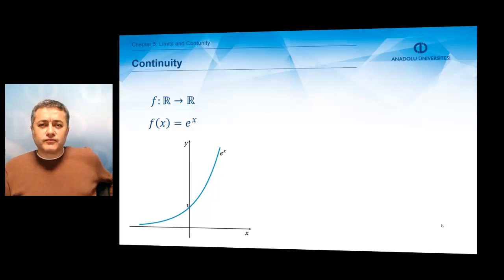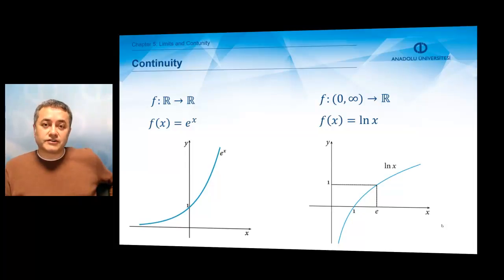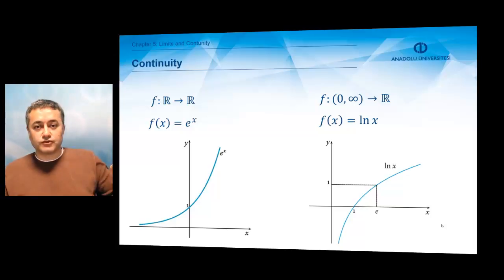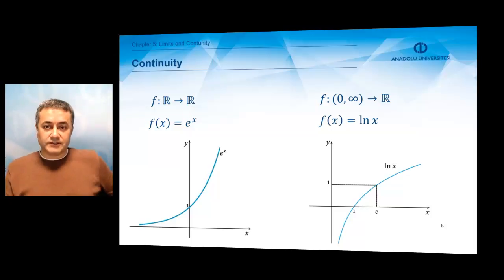There were functions introduced in our previous chapters. One of them is the exponential function and the other is the logarithmic function, and both of these functions are continuous on the domain of their definition. The exponential function is always continuous for all values of x. The logarithmic function is continuous for all values of x between 0 and infinity.